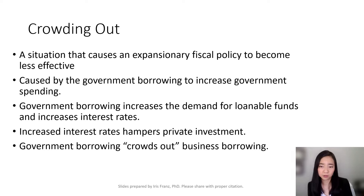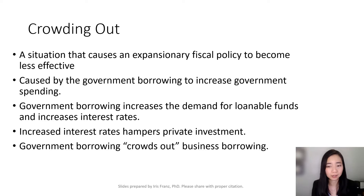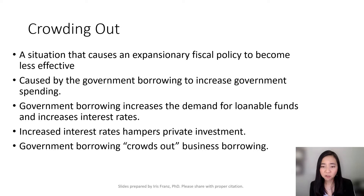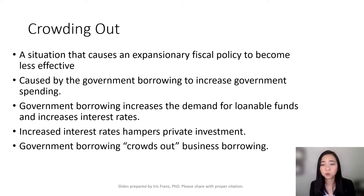Here is the situation of crowding out. When the government borrows to finance its spending, the demand for loanable funds will increase. As a result, the interest rate goes up, and that will hamper private investment. So government spending goes up, but private investment goes down, meaning aggregate demand is not going to increase as much as if there were no crowding out.